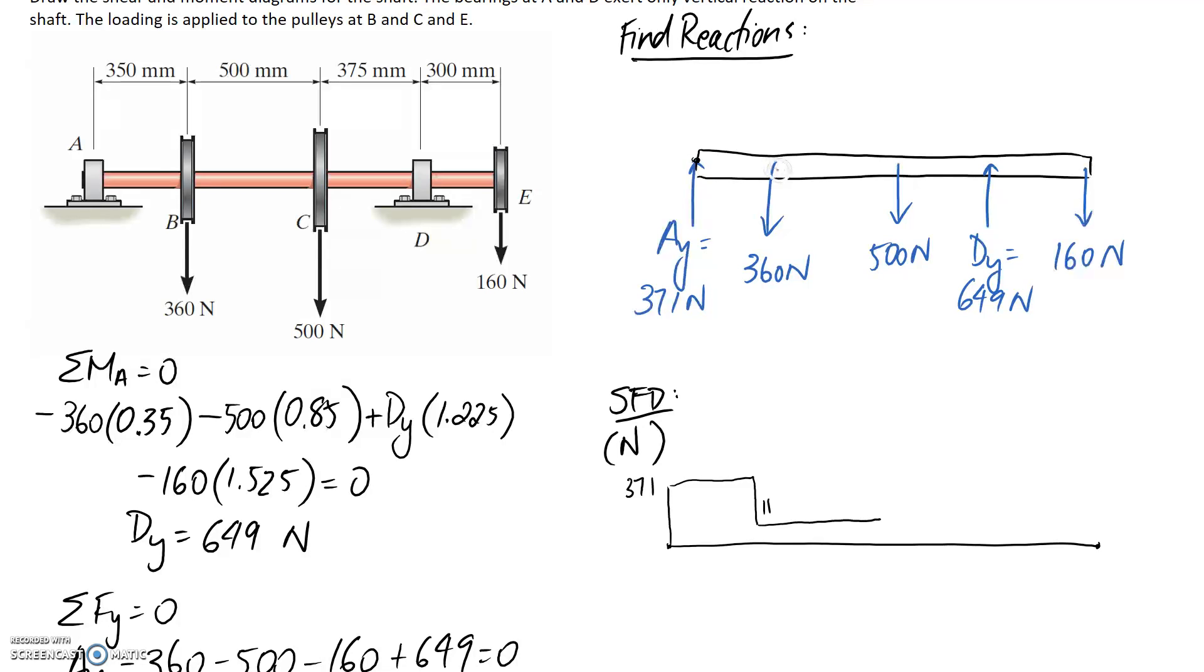So 371 minus 360 is going to take us to 11. We keep going across because there's nothing happening in here, it stays stable, and then we need to go down 500.